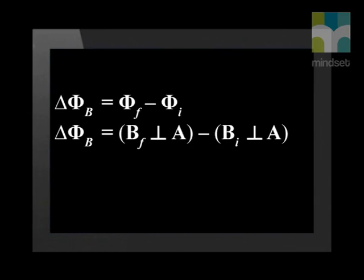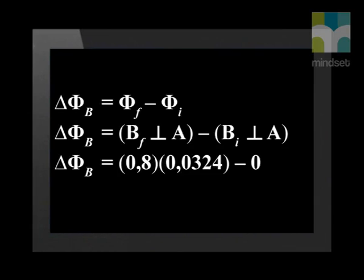Now we calculate the change in the magnetic flux. We calculate the final magnetic flux minus the initial magnetic flux. Remember the magnetic flux is the magnetic field strength multiplied by the area. The final magnetic field strength is 0.8 multiplied by the area of 0.0324 square meters, minus 0 since the initial magnetic field is 0. The answer is 0.02592 Weber. Again, this is not the final answer, so we will not round off.